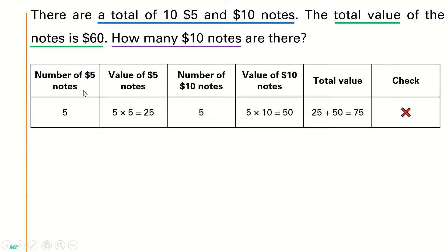We'll draw a table with columns with headings: number of $5 notes, value of $5 notes, number of $10 notes, value of $10 notes, total value, and of course, check.